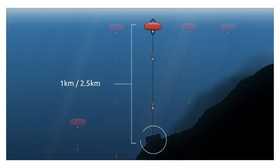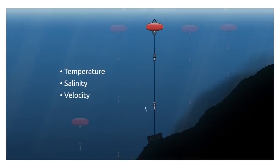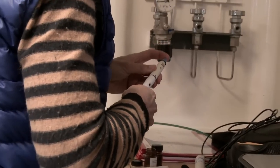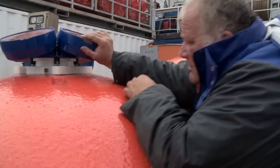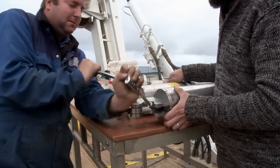The moorings are about two and a half kilometers to one kilometer long, held down at the bottom with a heavy weight. Along the cable, at several designated depths, we have instrumentation measuring temperature, salinity, and velocities. They're typically out for one year, then we come back, collect the moorings and retrieve the data, service the instruments, replace the batteries, and deploy them again to get another year of time series.